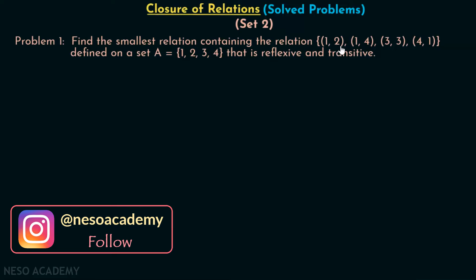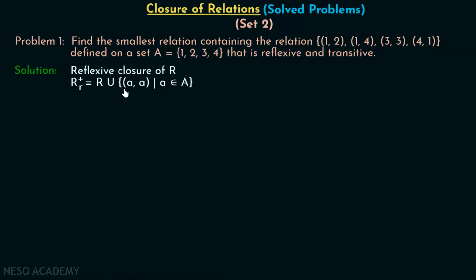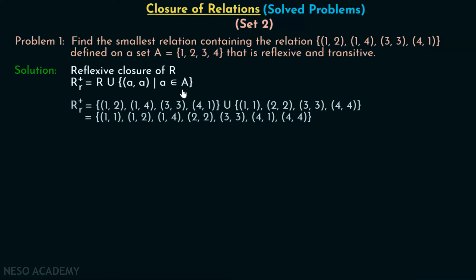Let's find the reflexive closure of this relation. R R+ is nothing but R union with the set of all ordered pairs (a, a) such that a belongs to set A. We write relation R as {(1,2),(1,4),(3,3),(4,1)}, then take the union with {(1,1),(2,2),(3,3),(4,4)}. The result — the reflexive closure — is {(1,1),(1,2),(1,4),(2,2),(3,3),(4,1),(4,4)}.